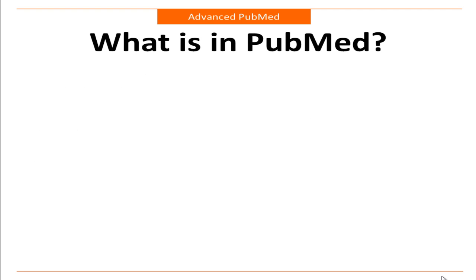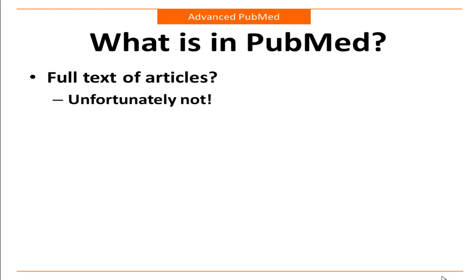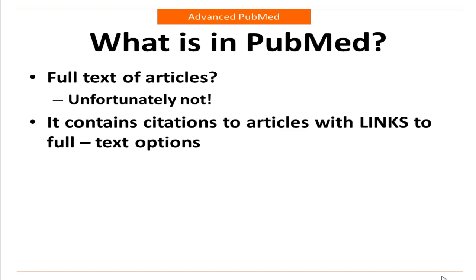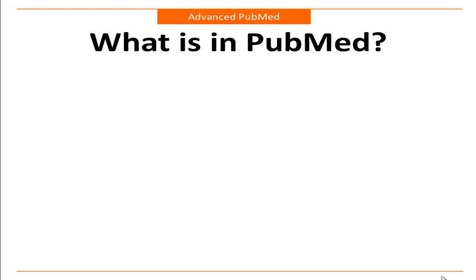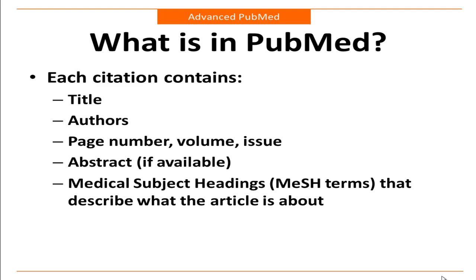First, what is in PubMed? We know it is a database of citations to journal articles in medicine and the related sciences. But is the full text of the article also available within PubMed itself? Unfortunately not. PubMed contains only the citations to articles and links to the full text options. Therefore, you are searching only the citation information, such as the article title, journal title, authors, page number, volume, and issue, and the abstract if it's available.